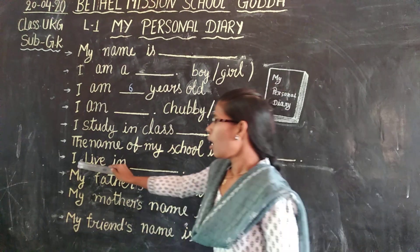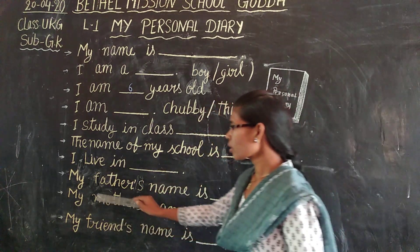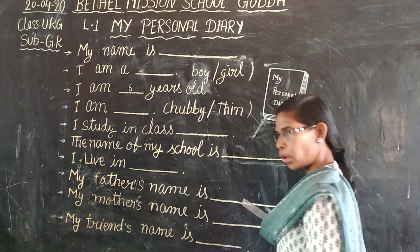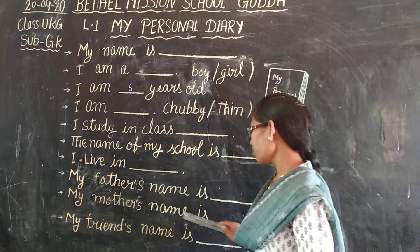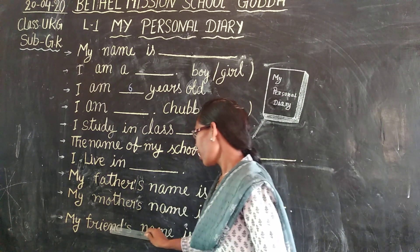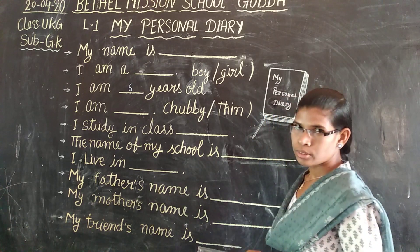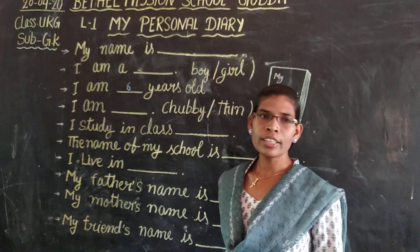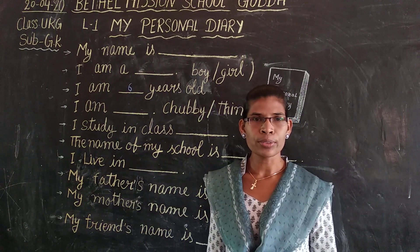I live in Gota. My father's name is Rohan. My mother's name is Sunita. My friend's name is Raju. So children, now you know the personal diary — I want all of you to write it. Okay, thank you.